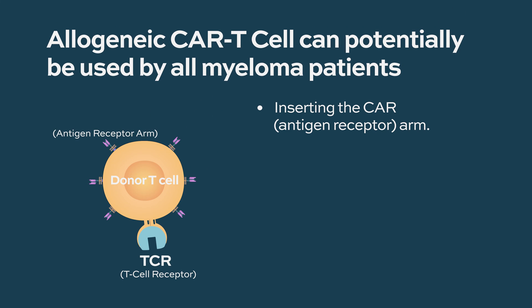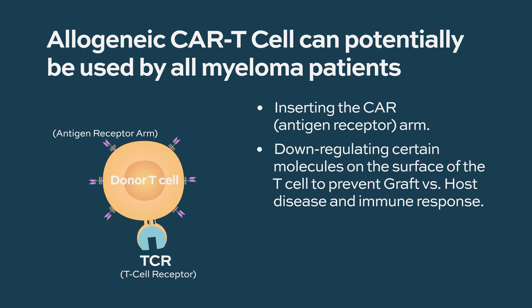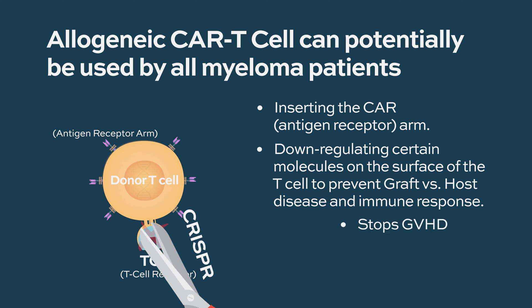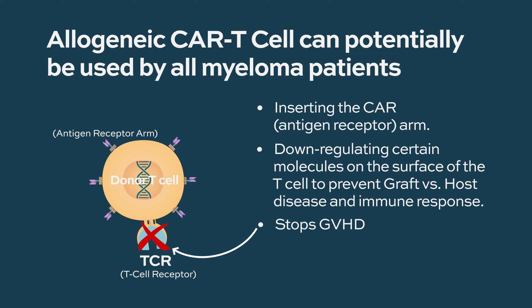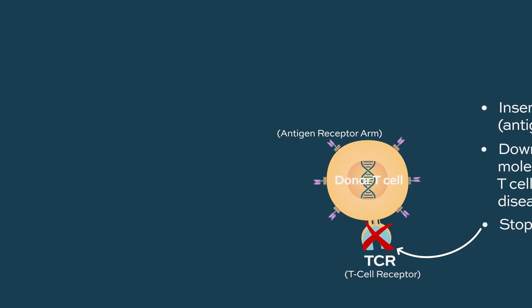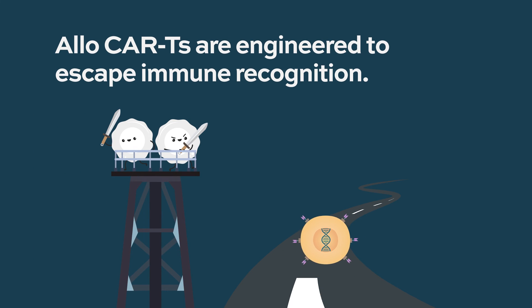The concept of an allogeneic CAR is that it could potentially be used for everybody. In addition to putting in the CAR, they're also down-regulating certain molecules on the surface of these T cells that are normally responsible for generating an immune response. They're generating a more genetically modified T cell that allows it to escape immune recognition by the host, so a third-party T cell put into different patients would not be rejected by either one.